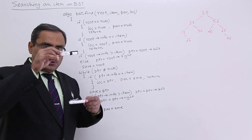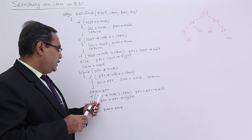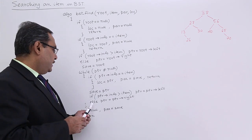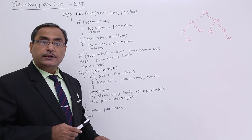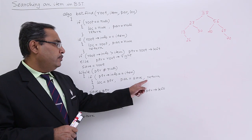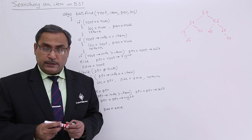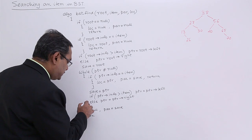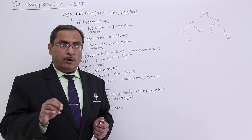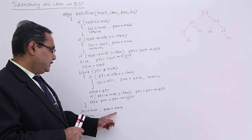Otherwise, save is updated to ptr, and ptr moves down either left or right: if ptr's info is greater than item, ptr equals ptr's left child; else ptr equals ptr's right child. If successful searching occurs inside the while body, we return from there. Otherwise, on exiting the loop, lock equals null — indicating unsuccessful searching — and par equals save, meaning the search item should exist as a left or right child of the par node.